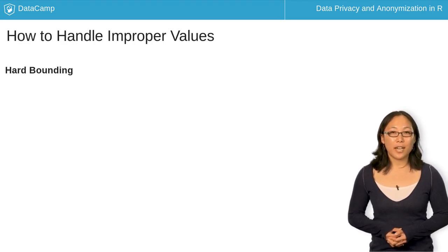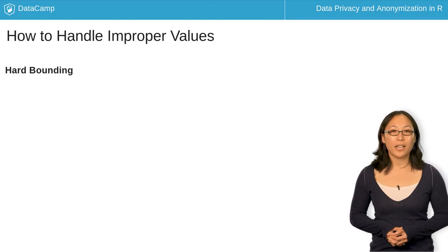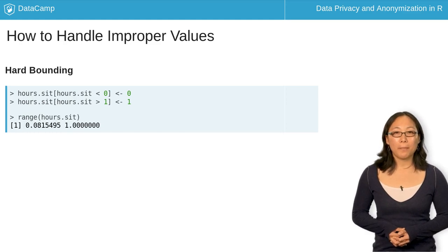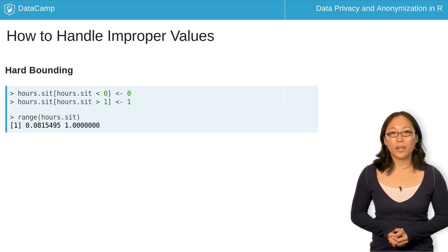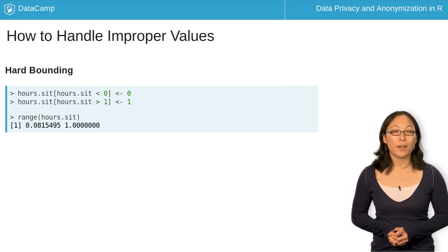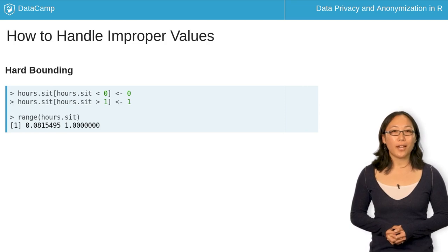Remember that the original data was bounded by 0 and 1. So, in case you generate any values outside these bounds, you should convert them such that any values above 1 are set to 1 and any values below 0 are set to 0. This is called hard bounding. An alternative to hard bounding is resampling the improper values until you obtain proper values. For now, we'll focus on hard bounding.